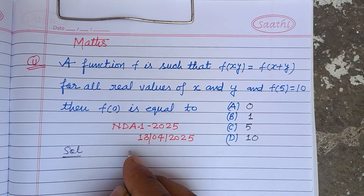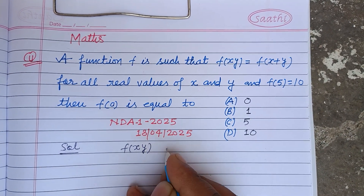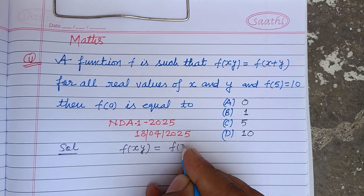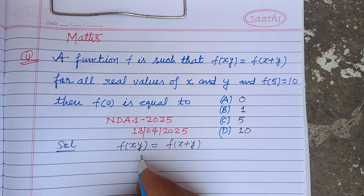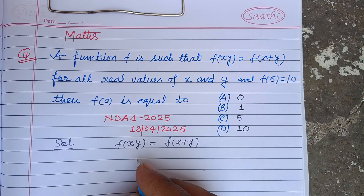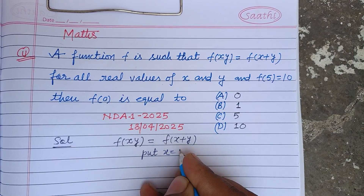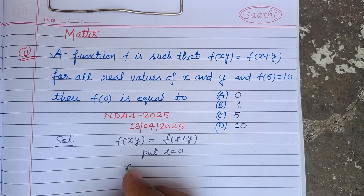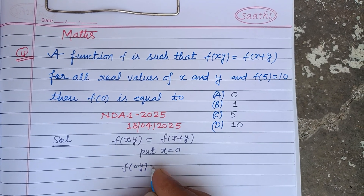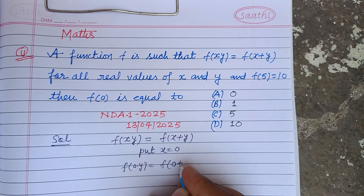It is given that the function is such that f(xy) equals f(x) plus f(y). Now put x equal to 0 in this. This becomes f(0·y) equal to f(0) plus f(y).